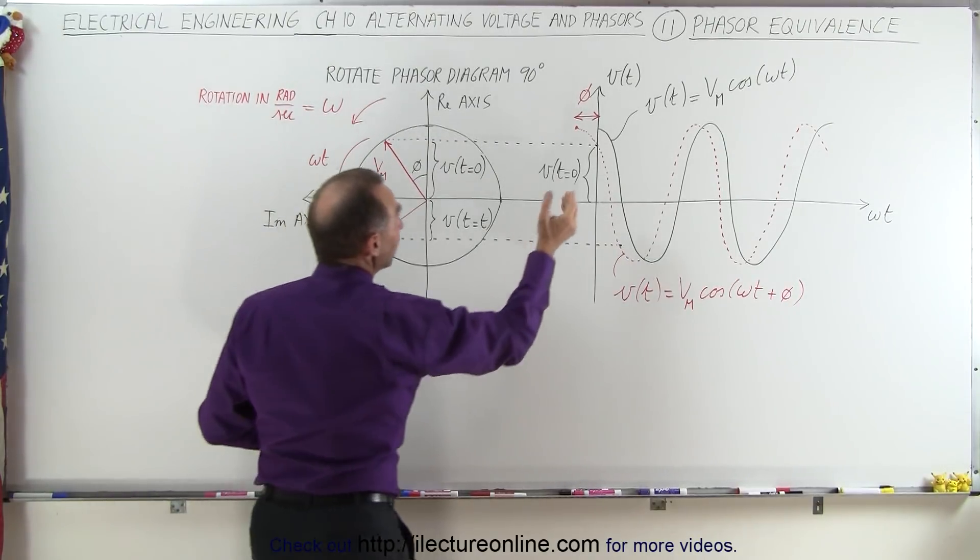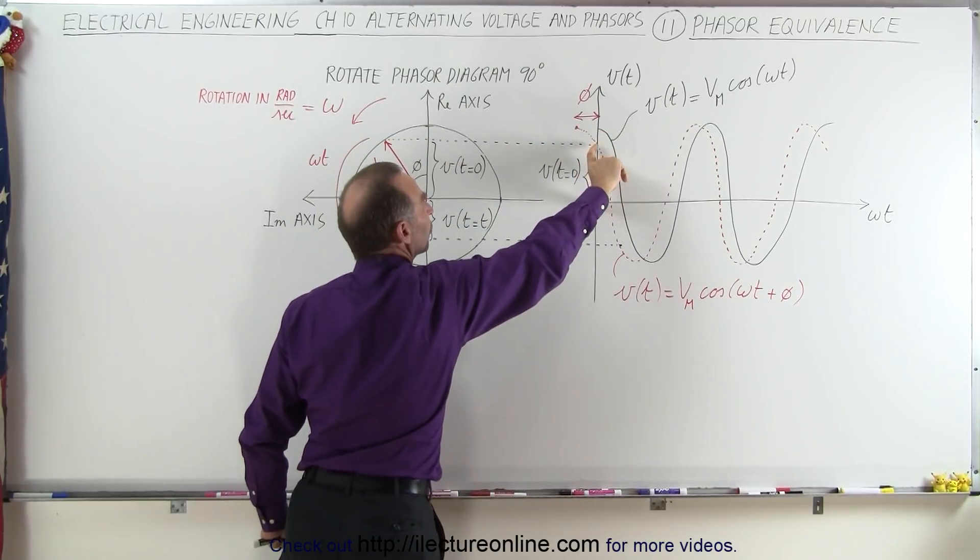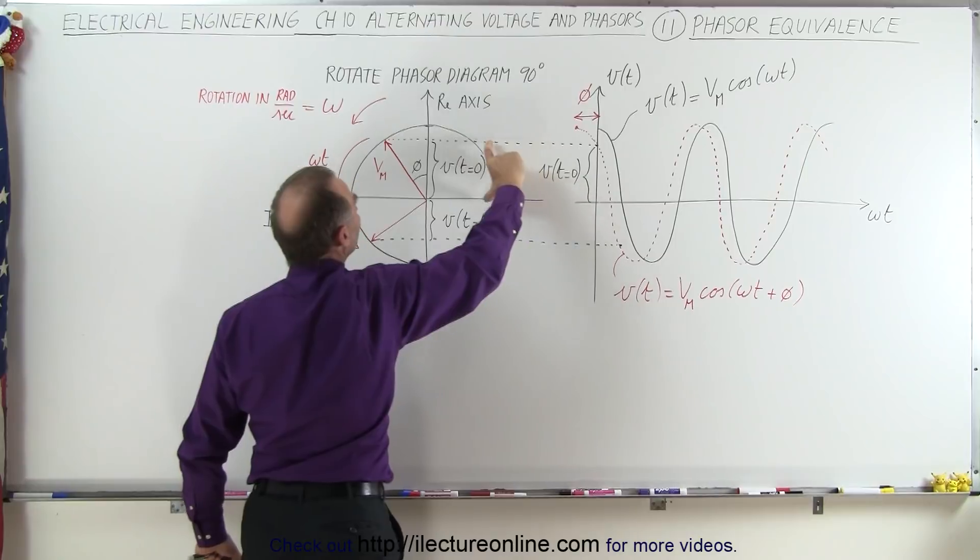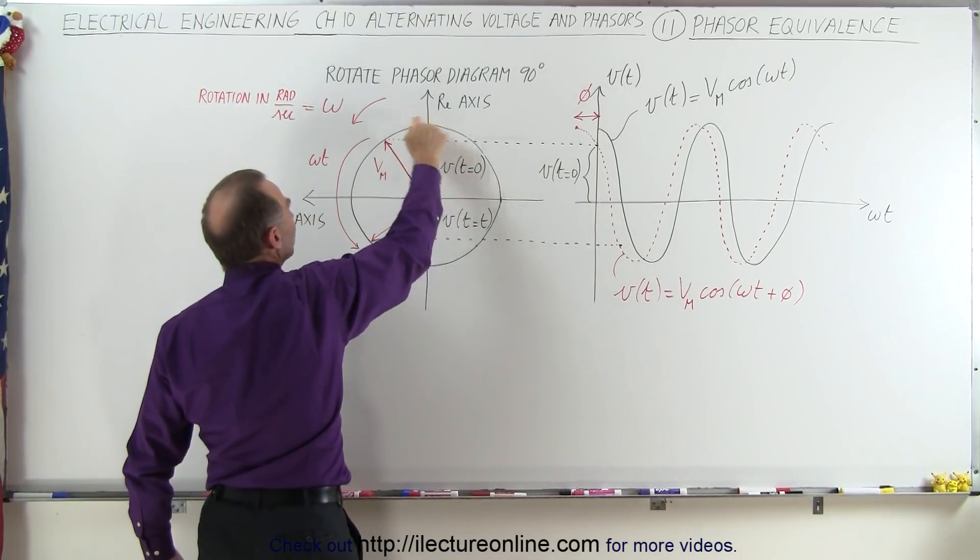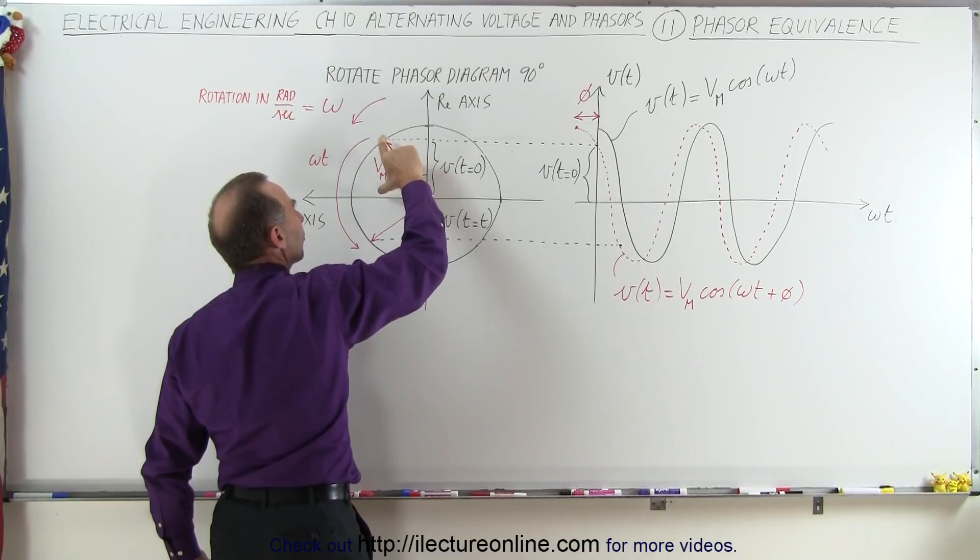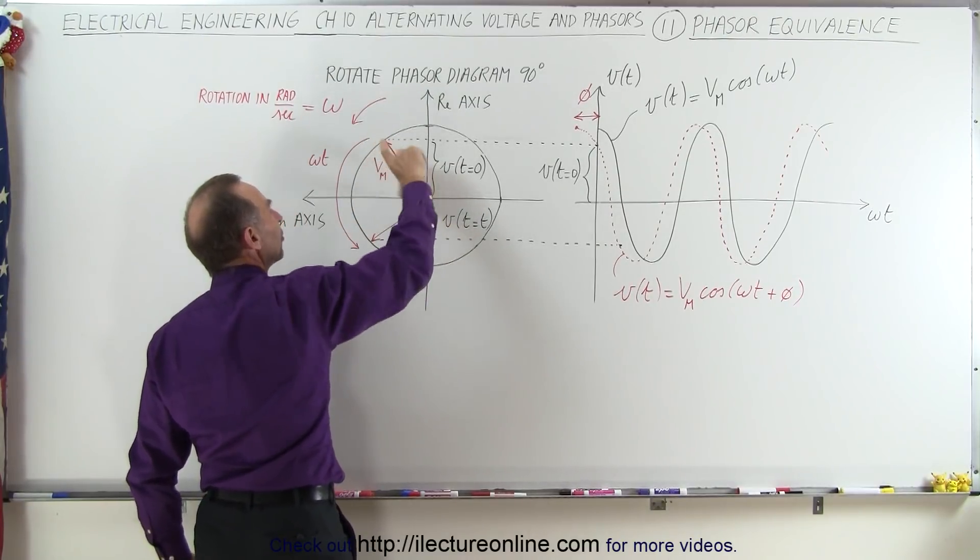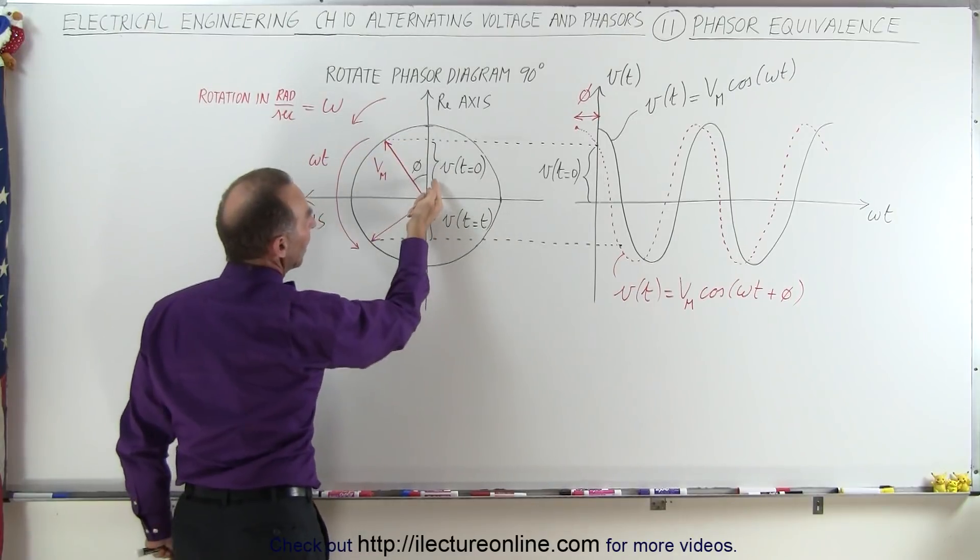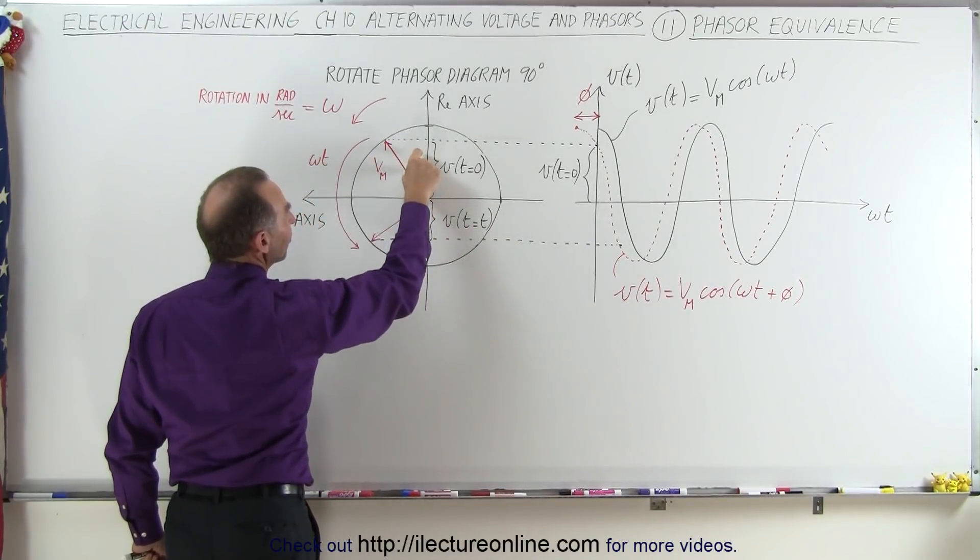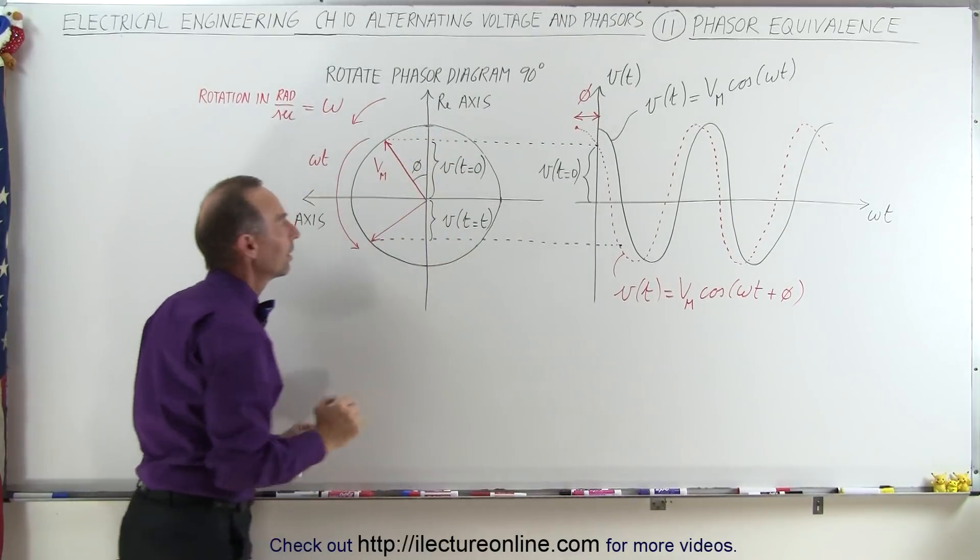Now that we have a phase difference, we have to reflect that phase difference here. So the voltage, which is this height right here, will transfer to the phasor diagram, where this represents the voltage at time equals zero. But here we have the maximum voltage, which is the magnitude of the phasor, and there's a phase difference between what it would be if there's no phase to where it is actually now.